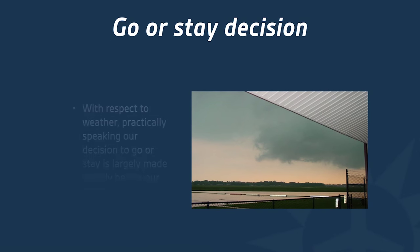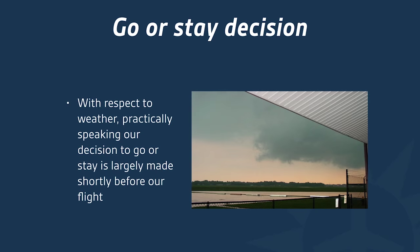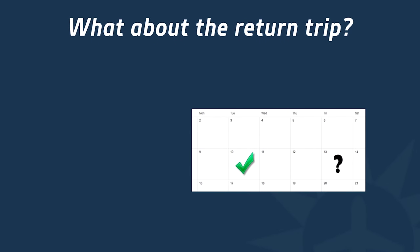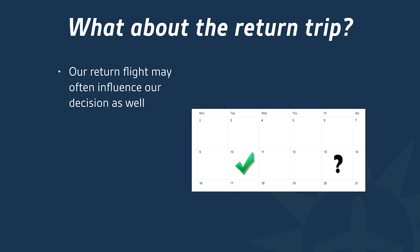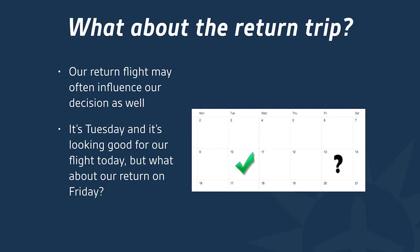It goes without saying that we usually don't make a go or no-go decision until shortly before our flight. But it's not always true. What about our return trip? That may actually influence our decision as well. For example, let's say it's Tuesday and the weather's looking pretty good for a flight today, but what about our return trip on Friday? We don't want to get to our destination and not be able to get back home.